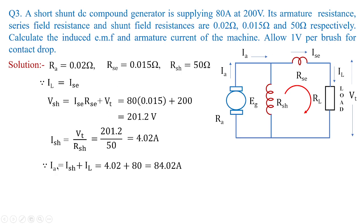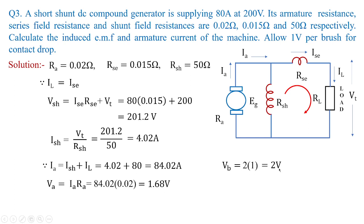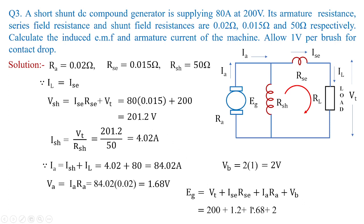Once armature current is obtained, armature voltage drop Ia·Ra = 84.02 × 0.02 = 1.68 volts. The brush contact drop Vb = 2 × 1 = 2 volts (two brushes at 1 volt each). Therefore, Eg = Vt + Ise·Rse + Ia·Ra + Vb = 200 + 1.2 + 1.68 + 2 = 204.88 volts. This is the generated voltage for the short-shunt compound generator.